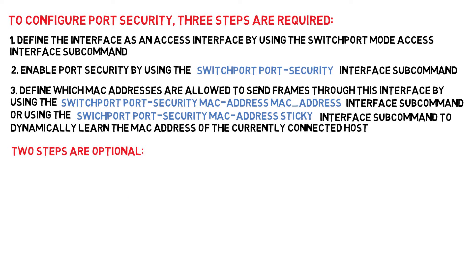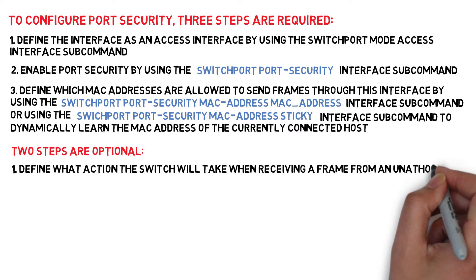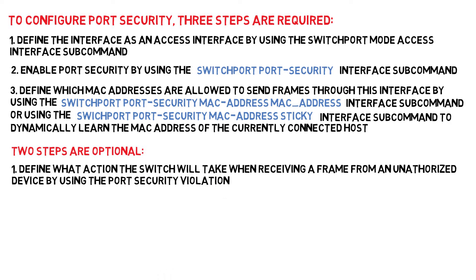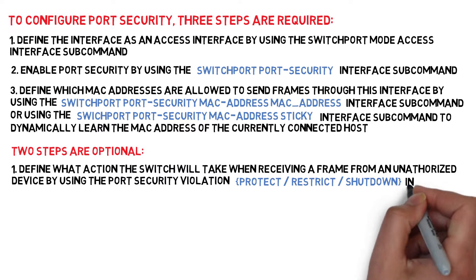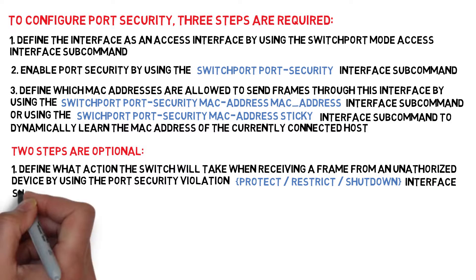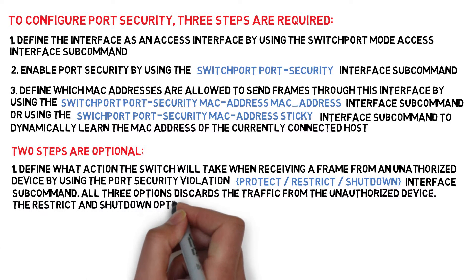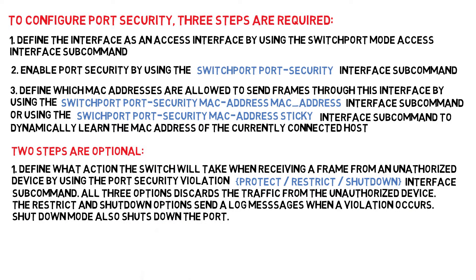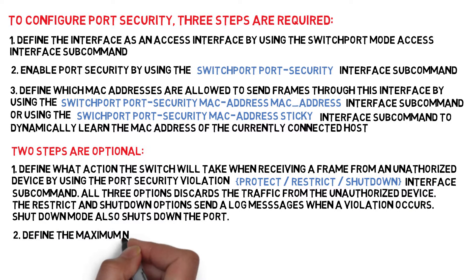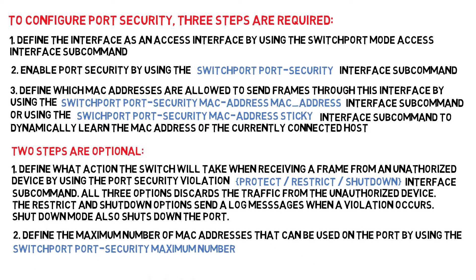Two additional steps are optional. 1. Define what action the switch will take when receiving a frame from an unauthorized device by using the 'port-security violation protect | restrict | shutdown' interface subcommand. All three options discard traffic from the unauthorized device. The restrict and shutdown options send log messages when a violation occurs. Shutdown mode also shuts down the port. 2. Define the maximum number of MAC addresses that can be used on the port by using the 'switchport port-security maximum number' interface subcommand.